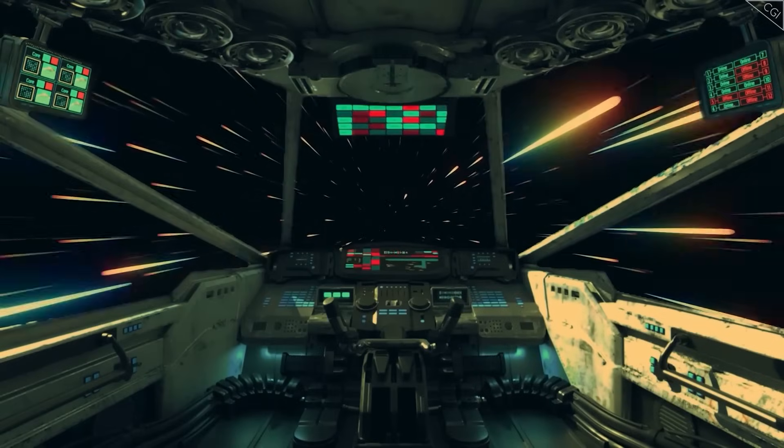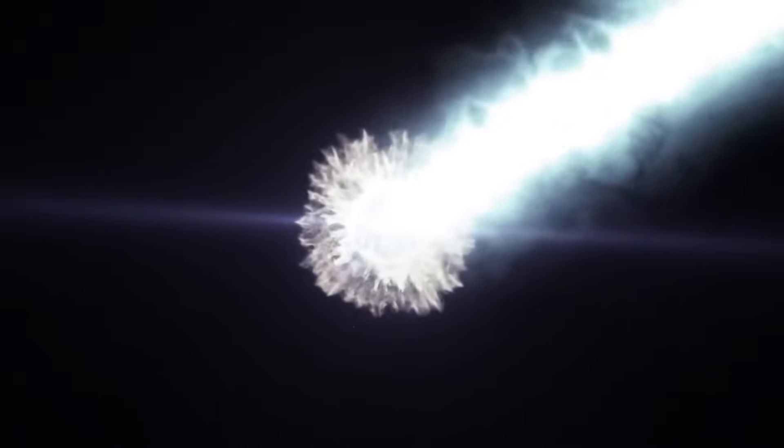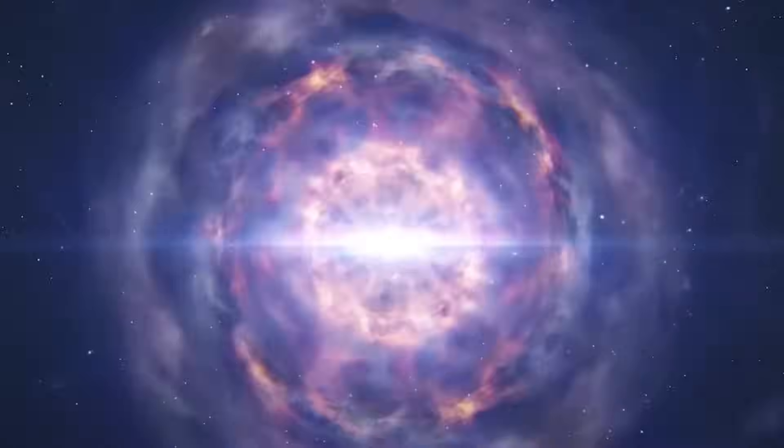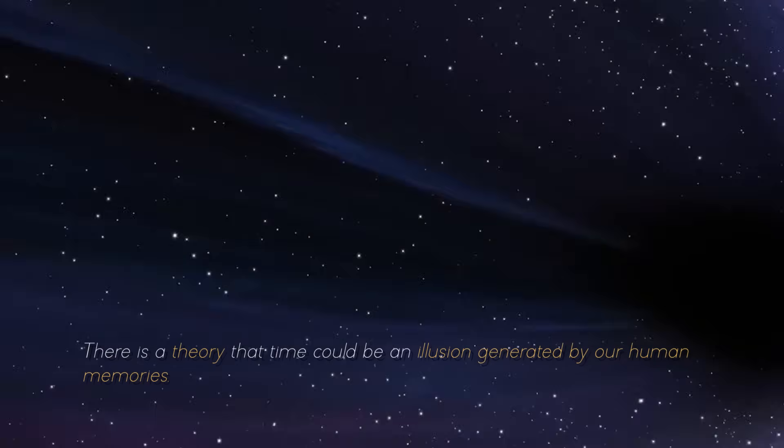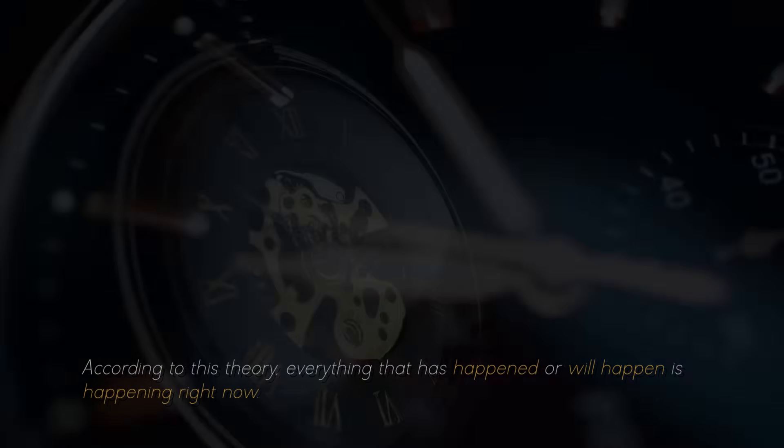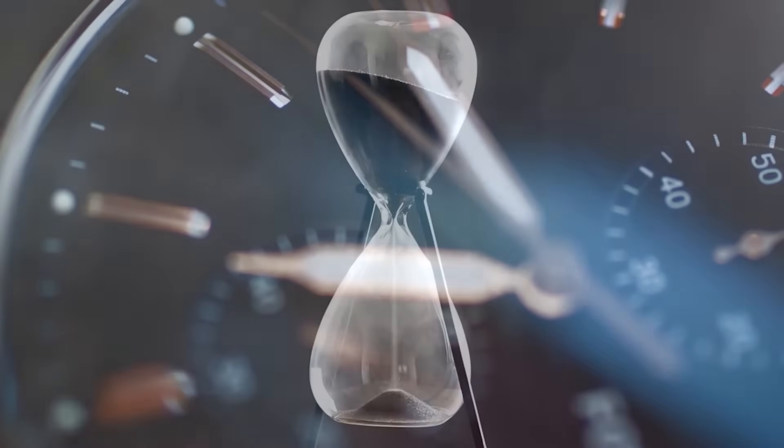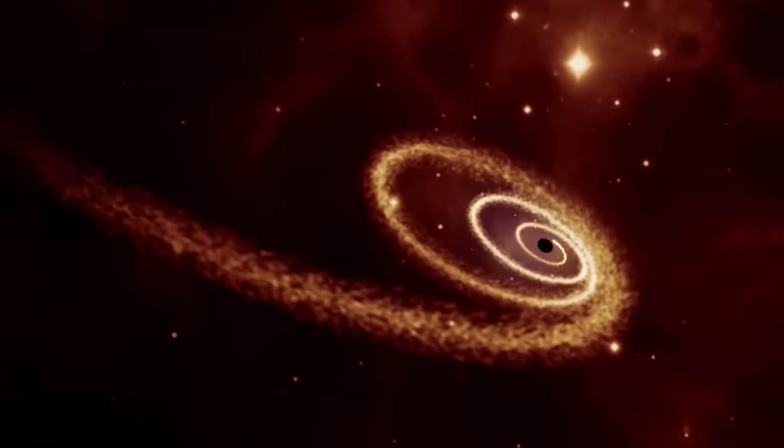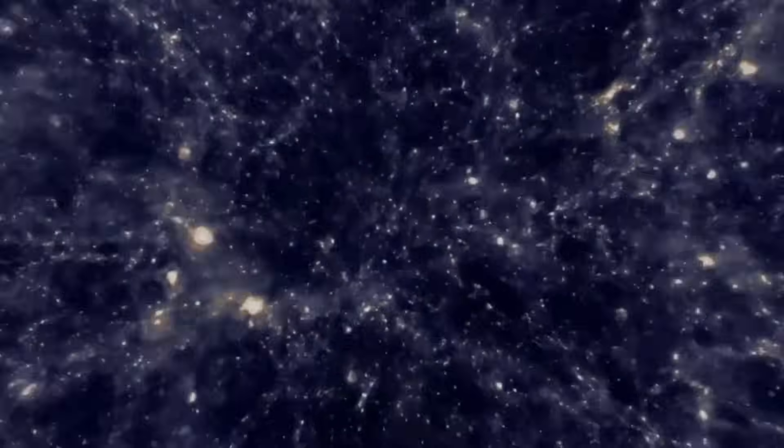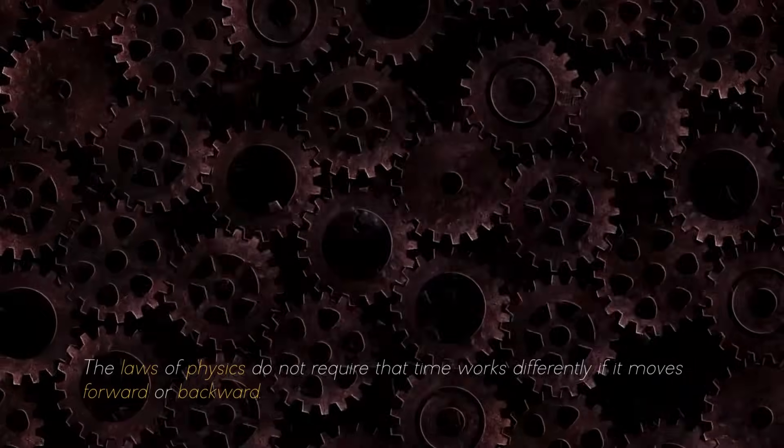Have you ever wondered whether time as we conceive it is a tangible reality or simply a human construct that we use to discern the past from the present? It is an extremely complex question, but we invite you to join us in its exploration. There is a theory that time could be an illusion generated by our human memories. According to this theory, everything that has happened or will happen is happening right now. It is a truly amazing concept, isn't it? If we delve deeper into this idea, we tend to think of time as something that flows invariably forward. However, here is the intriguing thing: the laws of physics do not require that time works differently if it moves forward or backward.